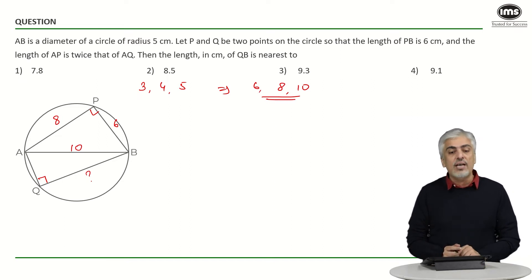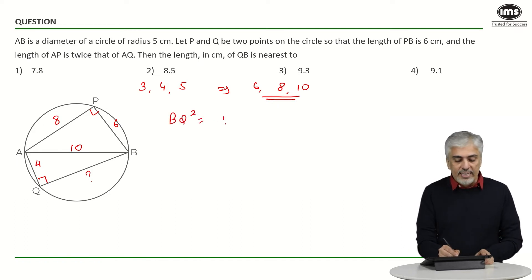Now they have told us AQ is half of AP, so AQ will become 4. We got AP as 8, so AQ is 4 and I want to find BQ. BQ square will be 10 square minus 4 square, again using Pythagoras. 100 minus 16 is 84 and BQ is root of 84.